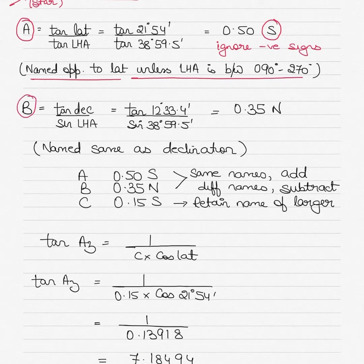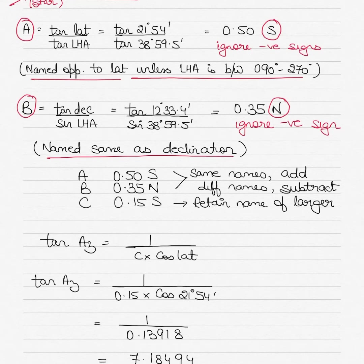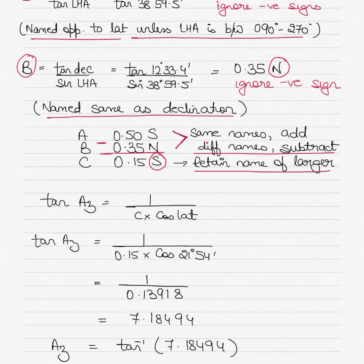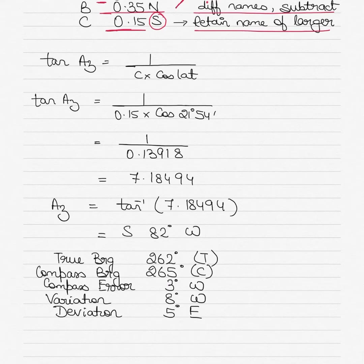Component B equals tan(declination) divided by sin(LHA). Ignore any negative sign but name B the same as declination. Our declination is North, so B is named North. Write A and B with their signs. The rule: if both are the same name, add them; if different names, subtract the smaller from the larger and retain the name of the larger. Here A is South and B is North — subtract and keep South, giving C = 0.15 South.